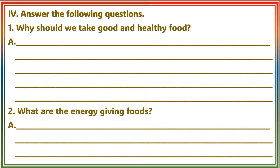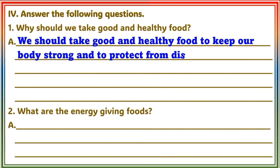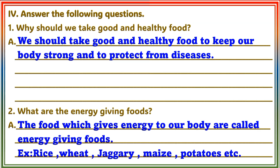Section 4: Answer the following questions. Question 1: Why should we take good and healthy food? Answer: We should take good and healthy food to keep our body strong and to protect from diseases. Question 2: What are the energy-giving foods? Answer: The food which gives energy to our body is called energy-giving food. Examples: rice, wheat, jaggery, madge, potatoes, etc.